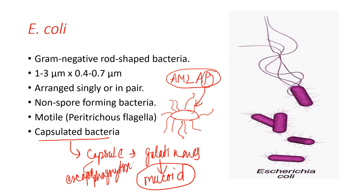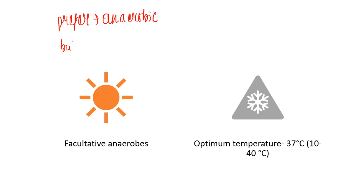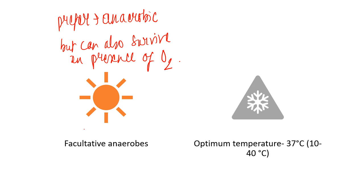E. coli is a facultative anaerobe. Facultative anaerobes are bacteria which prefer anaerobic conditions but can also survive in the presence of oxygen. So E. coli favors anaerobic conditions but can also survive in the presence of oxygen.